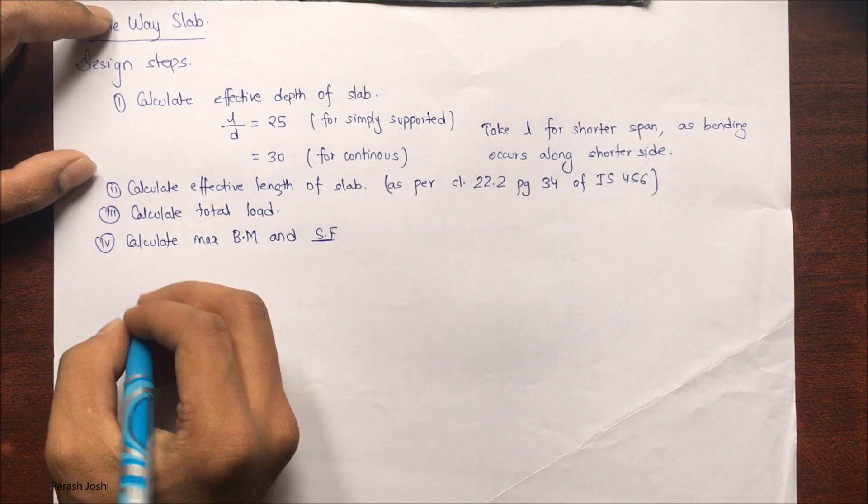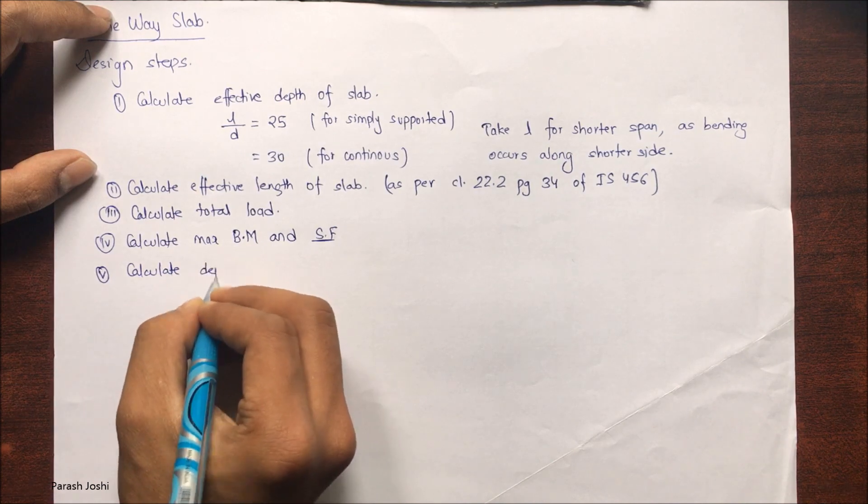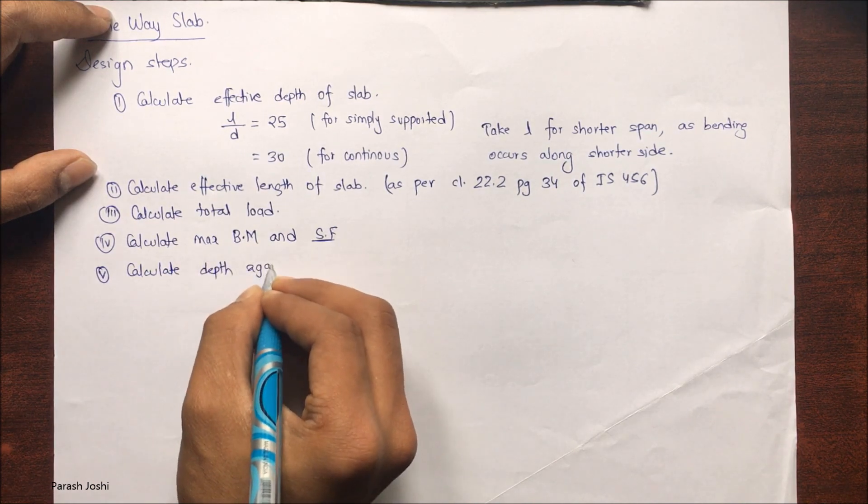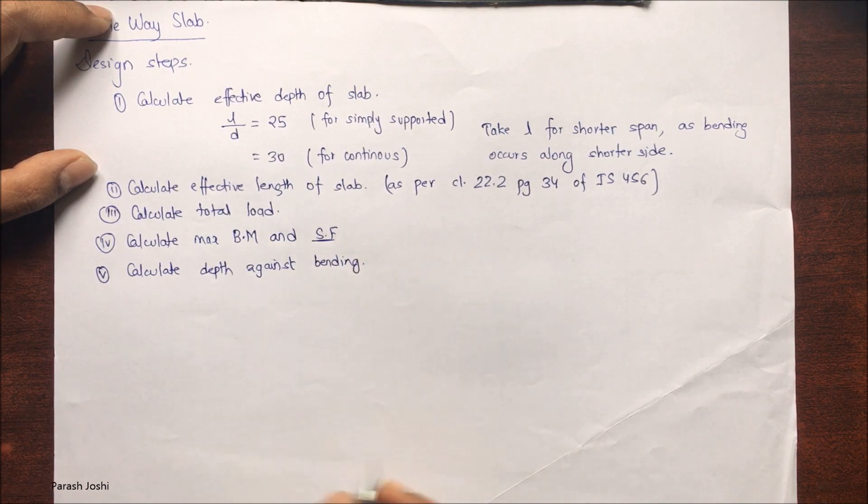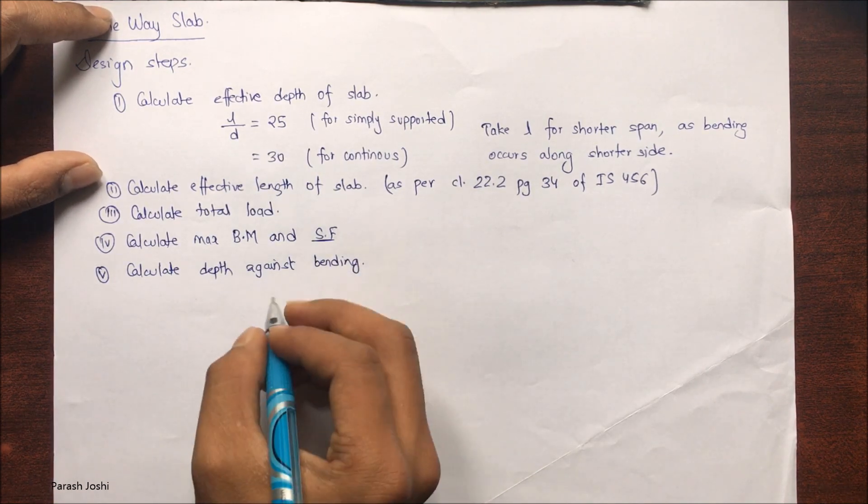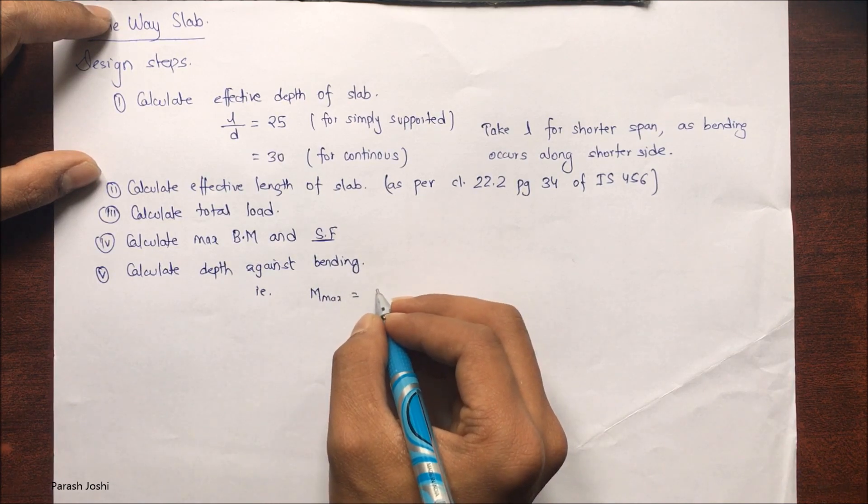Fifth step is to calculate the depth against the bending moment, whether the depth calculated is safe for the bending moment acting on the slab. So that is M max equals, we know for the beam.